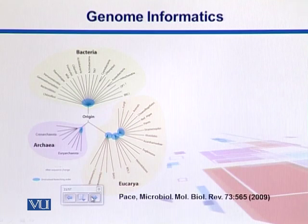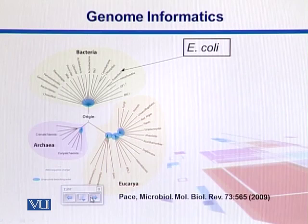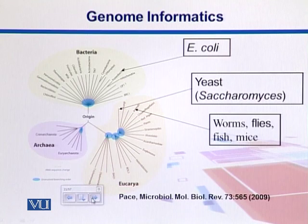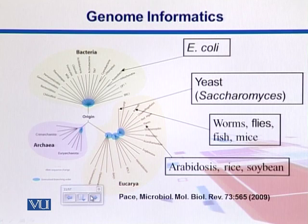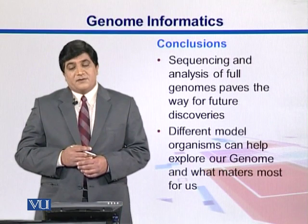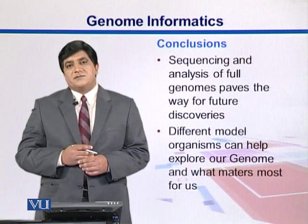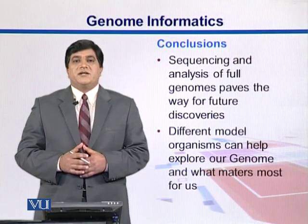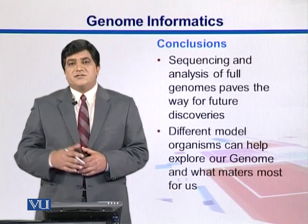We pick model organisms from important branches of this tree of life — E. coli represents bacteria, yeast represents fungi, and from animals we have worms, flies, fish, and mice. Arabidopsis, rice, and soybeans represent plants. In conclusion, genome sequencing paves the way for future discoveries, and model organisms are the best source for studying these genomes and interpolating results toward higher organisms.